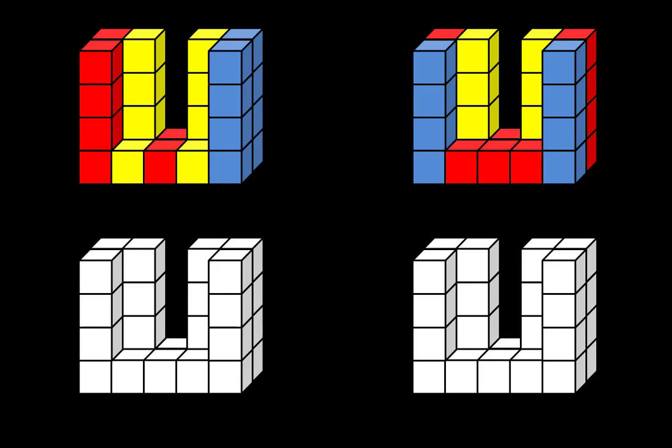Another approach is to find out the number of cubes in the front and in the back. There are 11 cubes in the front, and directly behind that, another group of 11, and then six more cubes in the middle.